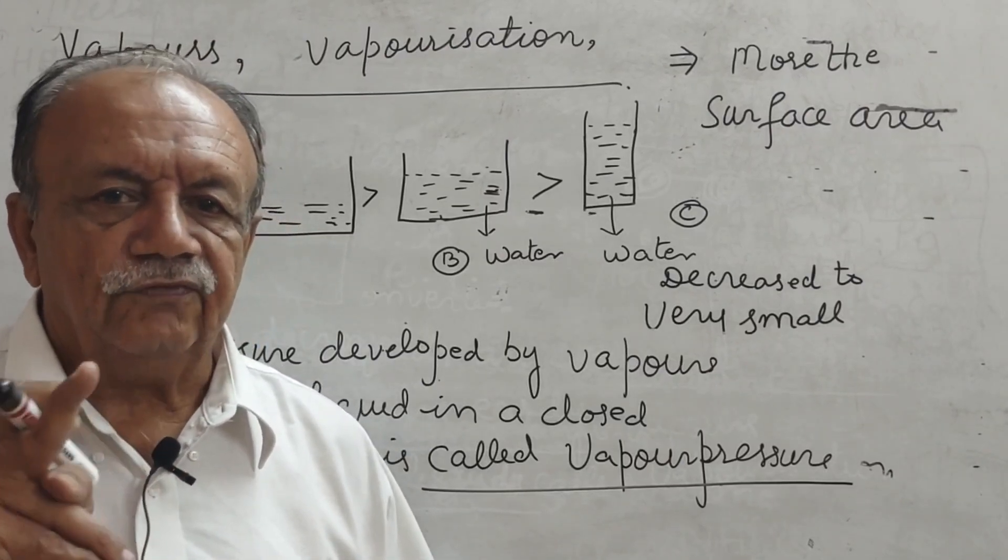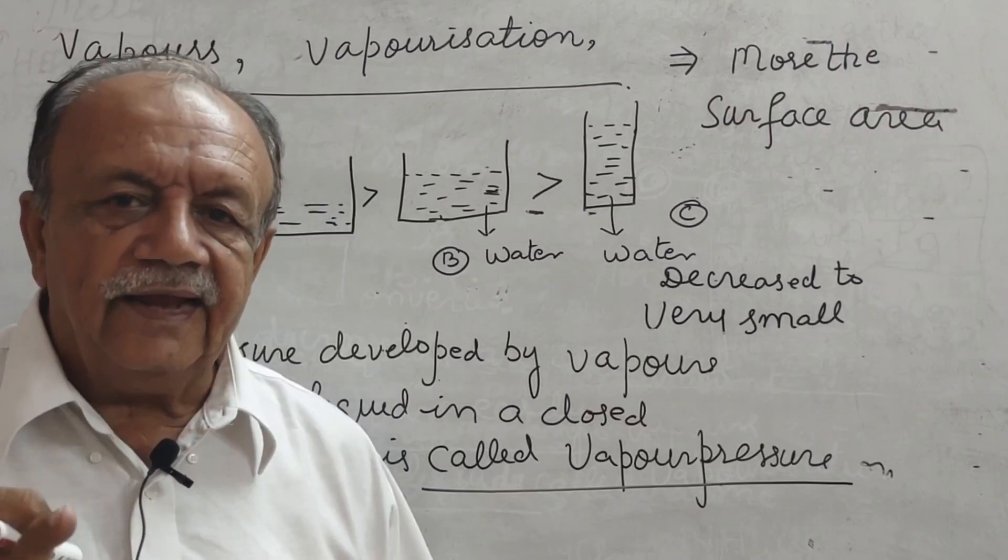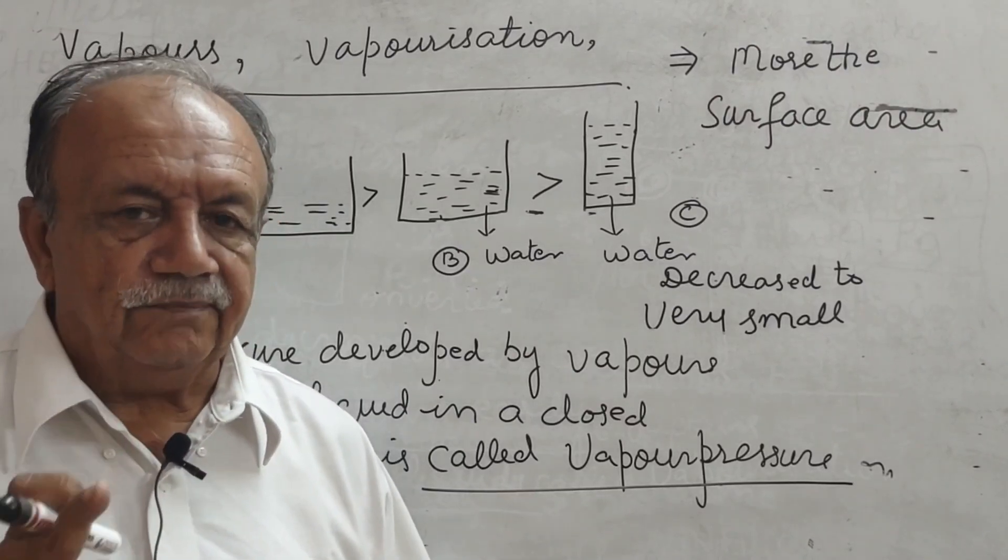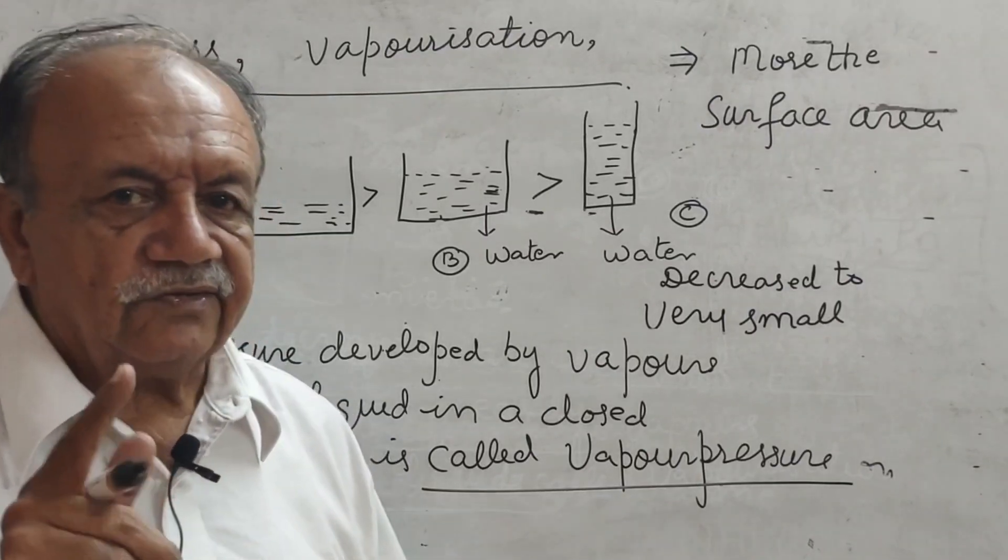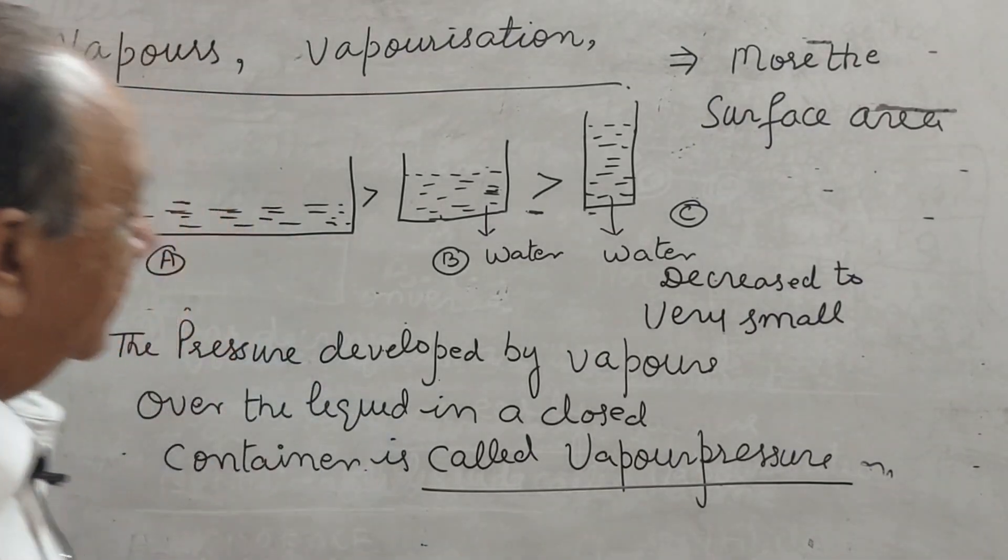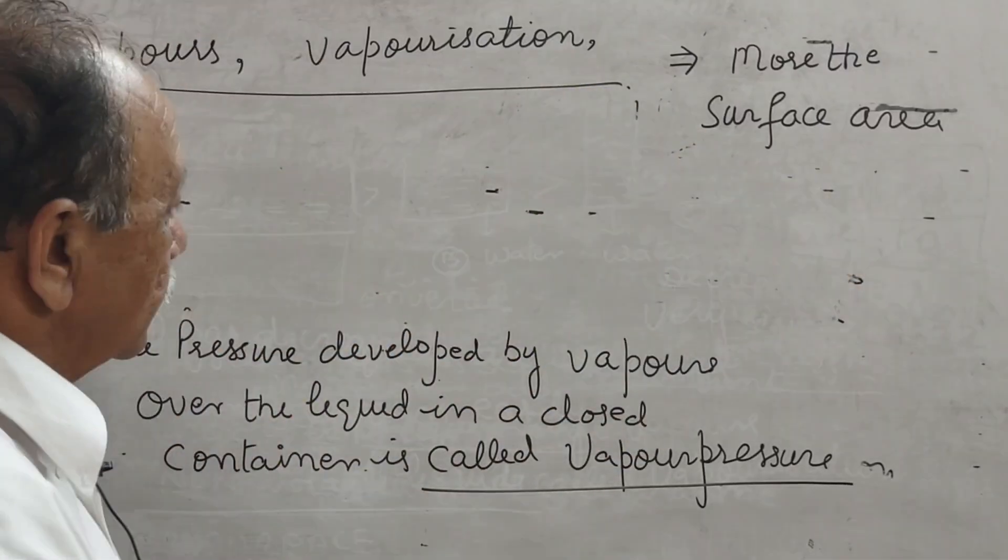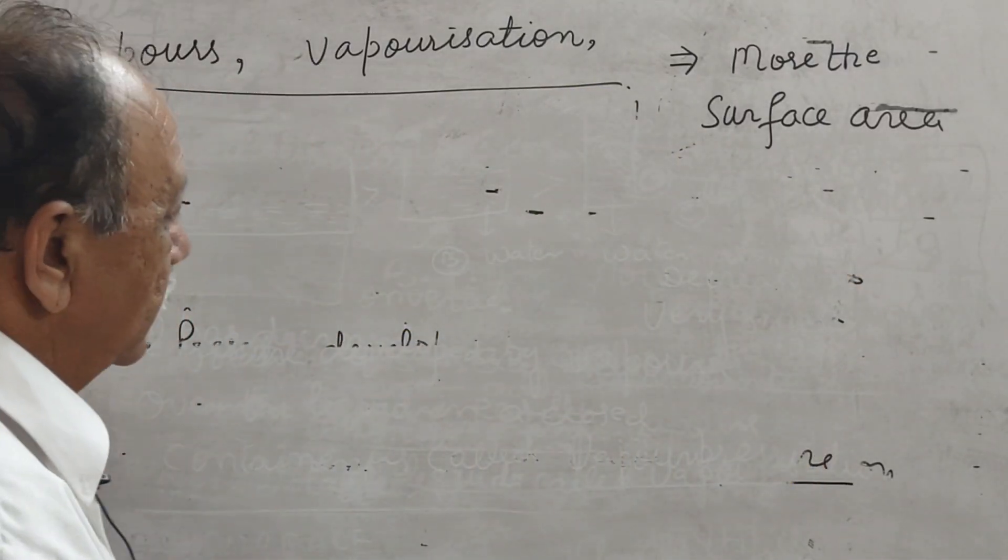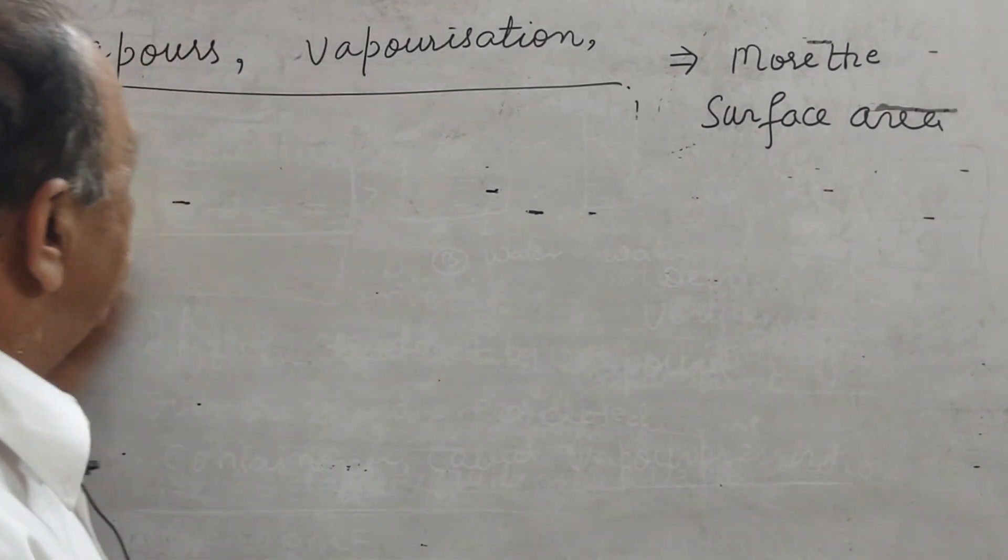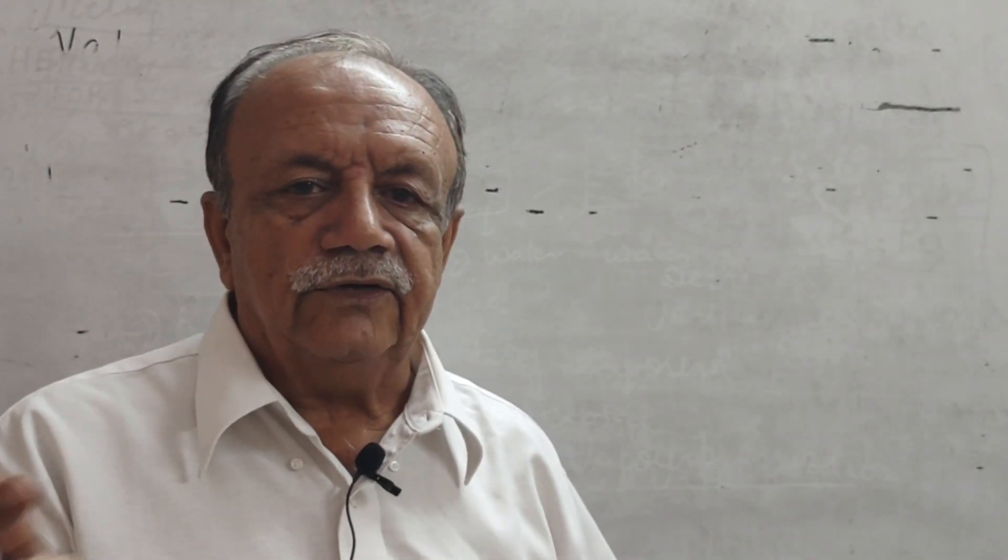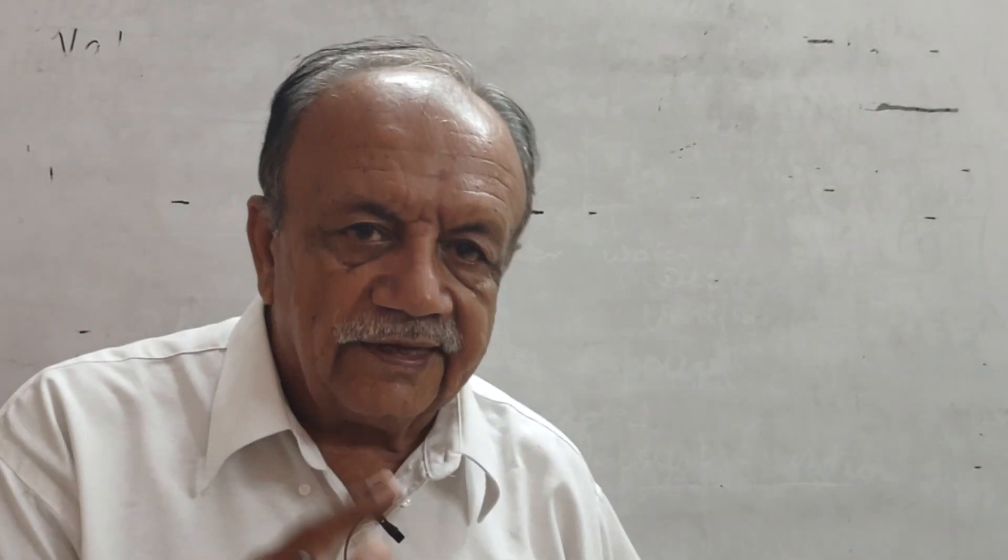It is slightly higher level point. Glass can flow at its own weight. Please, it is important. Glass is amorphous solid and glass can flow. Solids have stronger intermolecular forces as compared to liquids, as compared to gases.